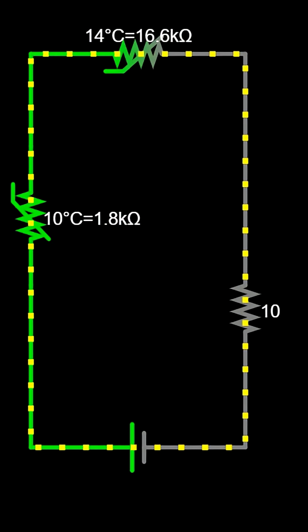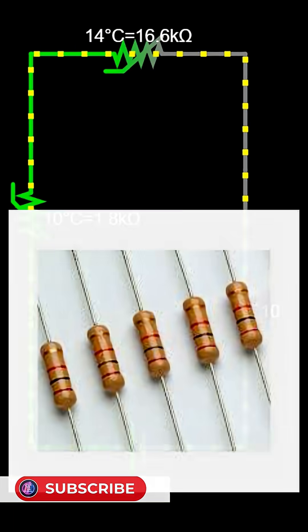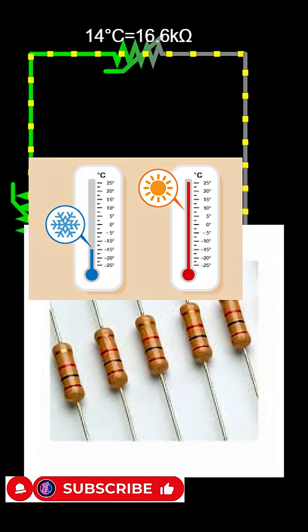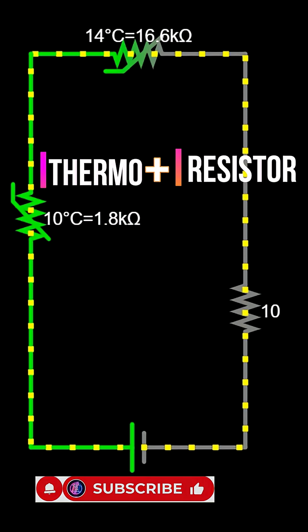Welcome to this short video about the thermistor. A thermistor is a special type of resistor whose resistance changes with temperature. The word comes from thermal and resistor. That means it reacts to heat.